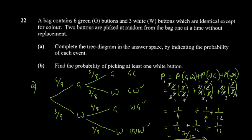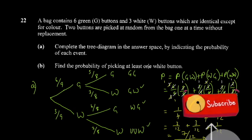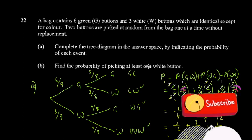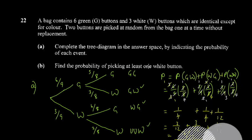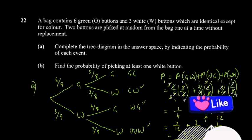That's the required probability — 7/12. Remember, 'at least one white button' means all outcomes where at least one W appears. That's it for these two questions — a hard paper, one of the toughest we've done. Practice well, do well in your exams, and make sure to like, share, and subscribe.